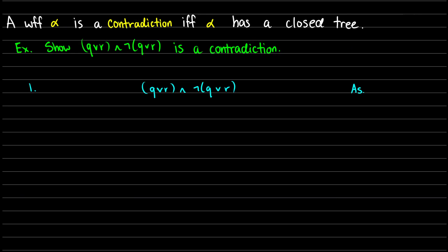With a contradiction, it's quite straightforward. If something is a contradiction, then the tree should close. So if we want to prove that alpha is a contradiction, we just have to work with alpha itself and close all the branches. I want to show that '(q or r) and (not-q or r)' is a contradiction. So let's work with that.